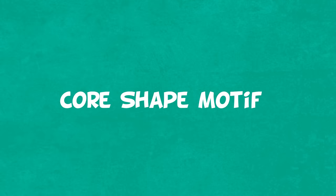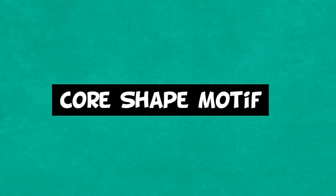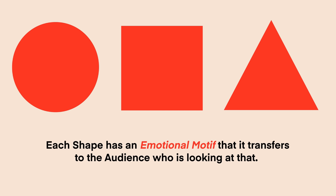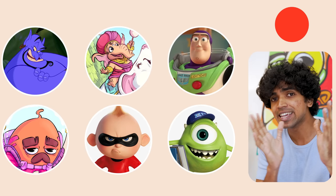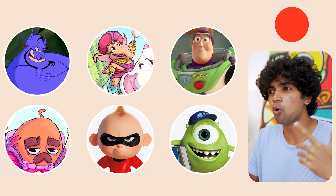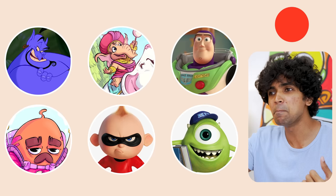Every character that is really well designed actually has a core shape motif. There are multiple key shapes — your circle, your square, and your triangle — and each shape has an emotional motif it transfers to the viewer. Characters designed with more rounded, circular shape language are more approachable, softer, and feel safe. That's what makes for good main characters, because you want your main characters to be approachable and soft.